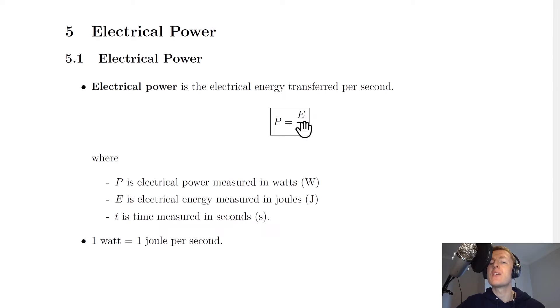So it says that power is equal to the energy divided by time, and this is the equation you'll get on the relationship sheet in the exam, and it tells us what the symbols are. So P is electrical power measured in watts, a capital W, E is electrical energy measured in joules, which is a capital J, and t is time measured in seconds, which is a small s as always.